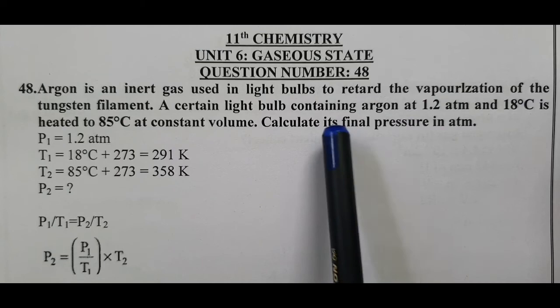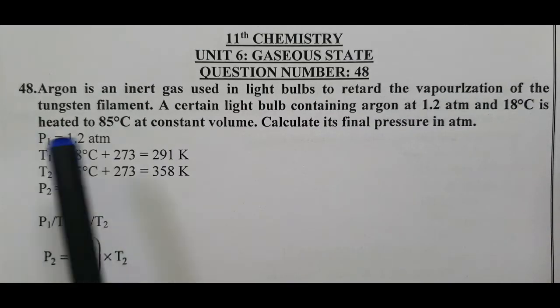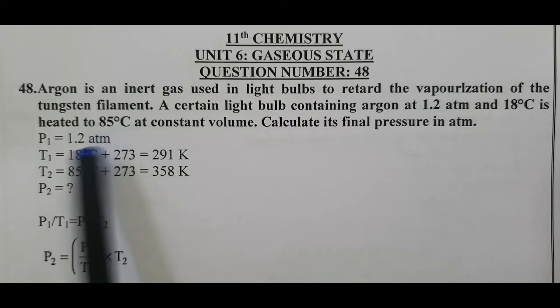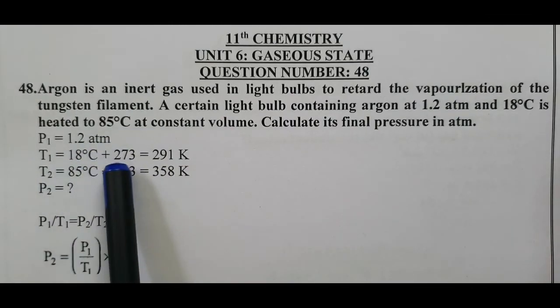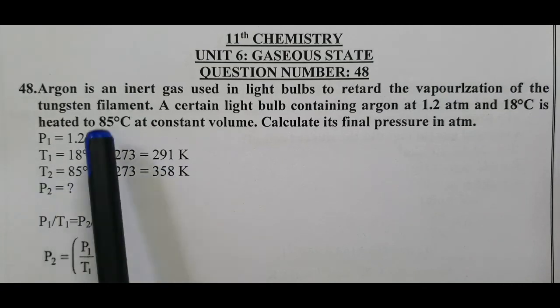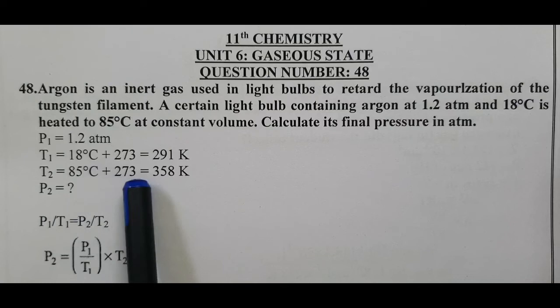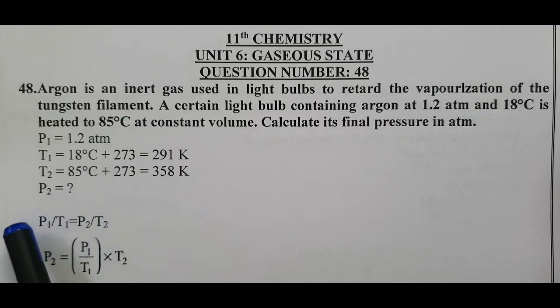P1 value is given as 1.2 atm. T1 is 18 degrees Celsius plus 273, which equals 291 Kelvin. T2 is 85 degrees Celsius plus 273, which equals 358 Kelvin. We have to calculate P2.